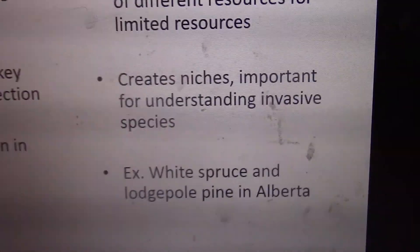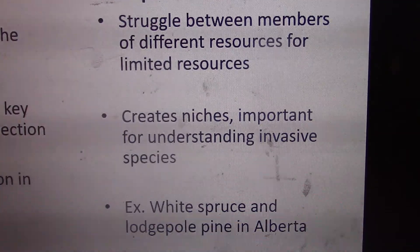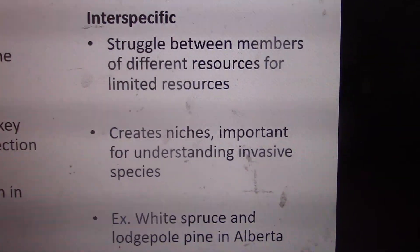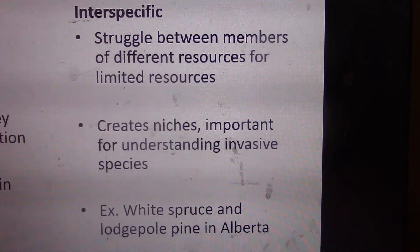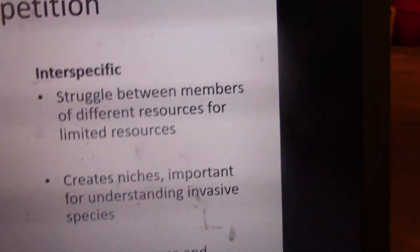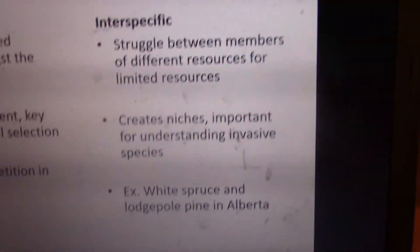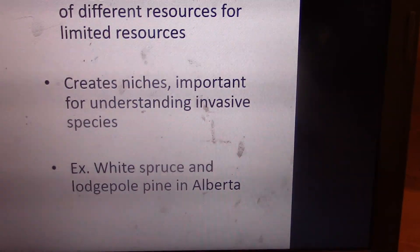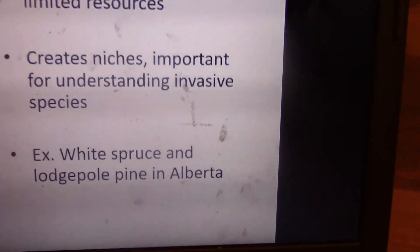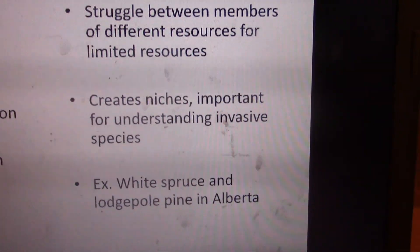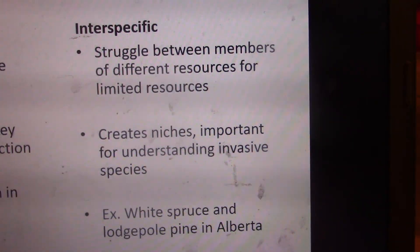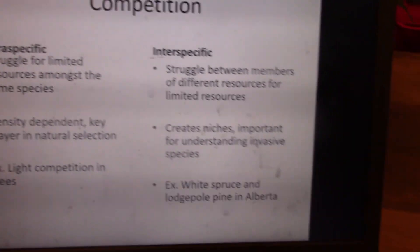Interspecific competition is a struggle between members of different species for limited resources, and ultimately what happens is resource partitioning. Remember Gause's principle from Bio 20: no two species can exist in the same niche, or one loses out. This is where evolution happens and different behavioral patterns arise to avoid competition. For example, white spruce handles boggy conditions while lodgepole pine handles drier conditions, though they share similar life history strategies as coniferous trees.